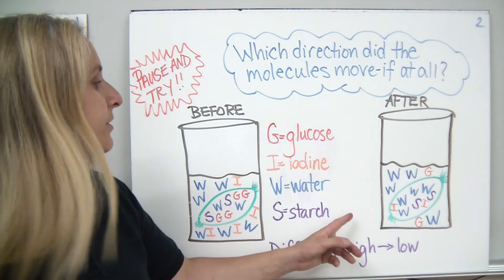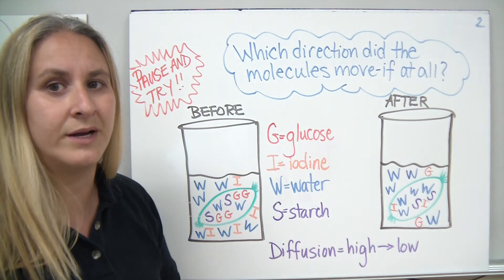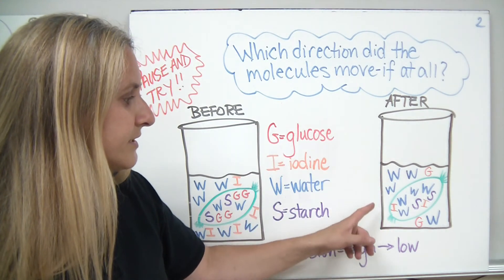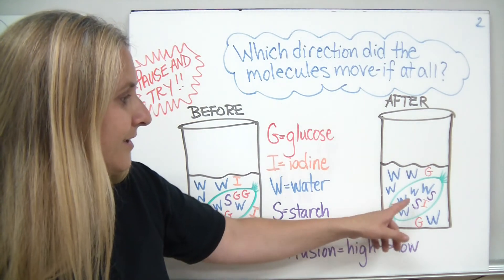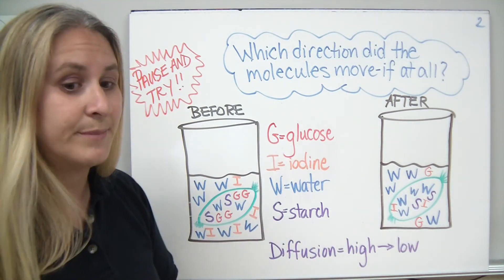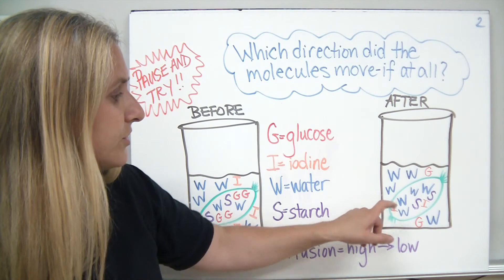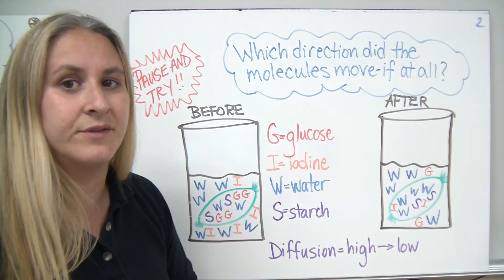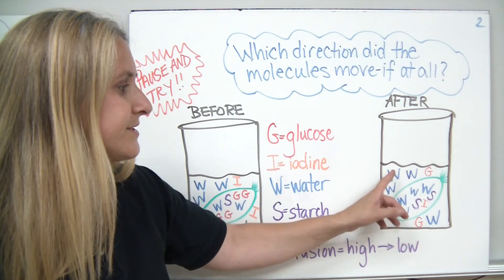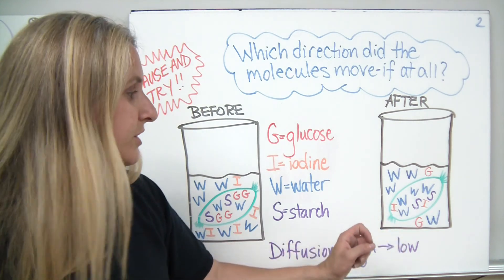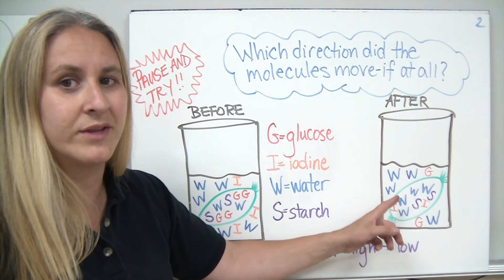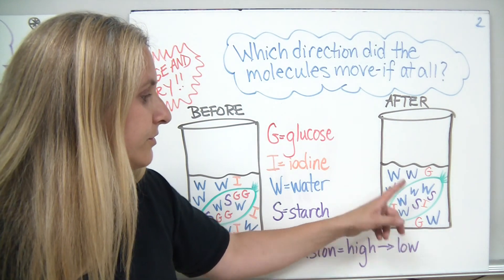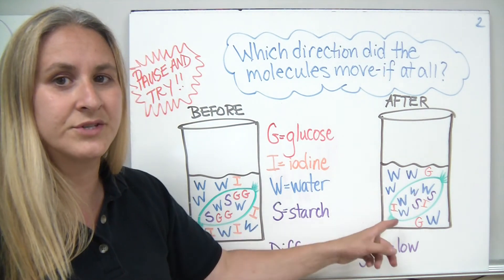After we set the experiment up and let it sit for a while, you notice that several things happened. In our instance, we had iodine move into the bag, and there actually should be two I's outside of the beaker here because there was still some iodine left over in the solution. We had some water move into the bag, or our simulated cell, and we had glucose move out.